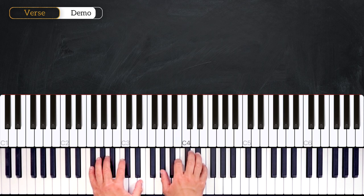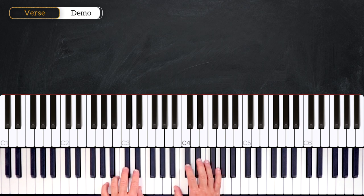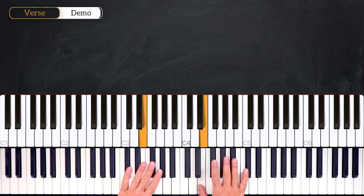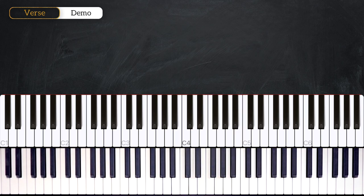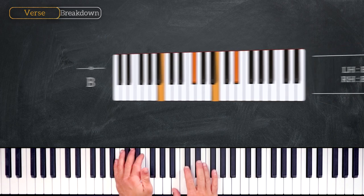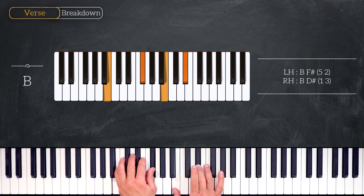In this first part we are going to learn the verse of the song. We are in the key of B major. We'll start by playing the first degree — this B major chord — with B and F# on the left hand, and B and D# on the right.